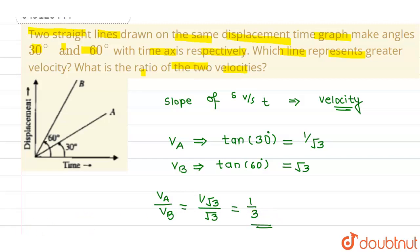Now we are also asked to find out which line represents greater velocity. So this value equals 0.577, and the value of √3, as we know, can be written as 1.732. So velocity VB is greater than VA.